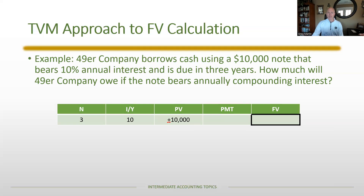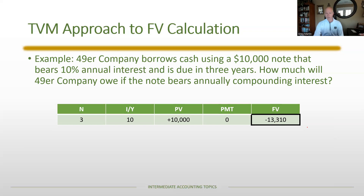The calculator outputs negative $13,310. This is just mathematical sign convention: if PV is entered as positive, FV outputs as negative — it's equating both sides. If you'd entered PV as negative, FV would be positive. In this simple problem the sign doesn't matter much, but in future TVM problems sign conventions become important. The key result: you owe $13,310 after three years.